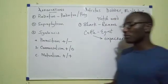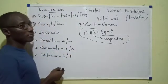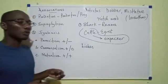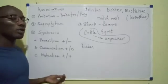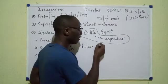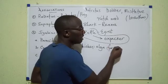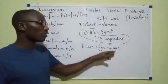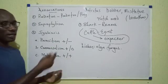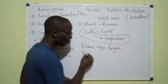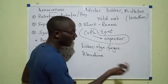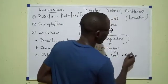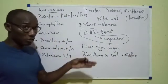For mutualism, both organisms benefit. Another example is the lichen — not one organism, but a dual organism: two organisms in one. In the lichen you have an alga and a fungus living together as one unit. The alga, being photosynthetic, can make food, while the fungus provides protection. Another example is rhizobium, a bacterium that helps fix nitrogen for legumes — found in the root nodules of legumes.